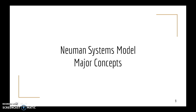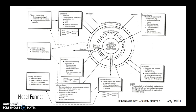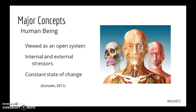Next we will discuss the major concepts of the Newman Systems Model. This diagram of the basic structure of the Newman Systems Model shows how the stressors interact with the lines of defense, and also outlines reactions, interventions, reconstitution, and primary, secondary, and tertiary prevention. The human being is viewed as an open system that interacts with both internal and external environment forces or stressors. The human is in constant change, moving toward a dynamic state of system stability or toward illness of varying degrees, referring again to homeostasis.